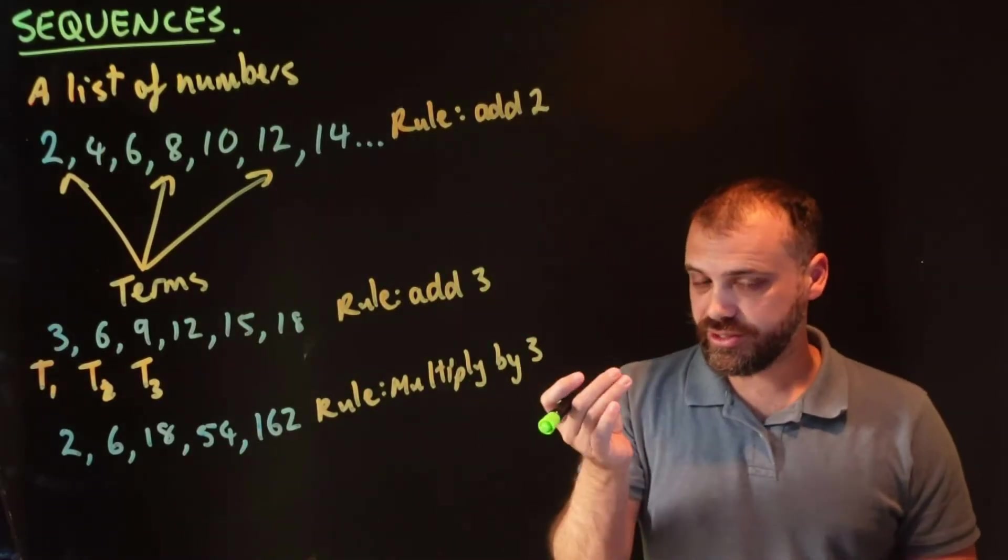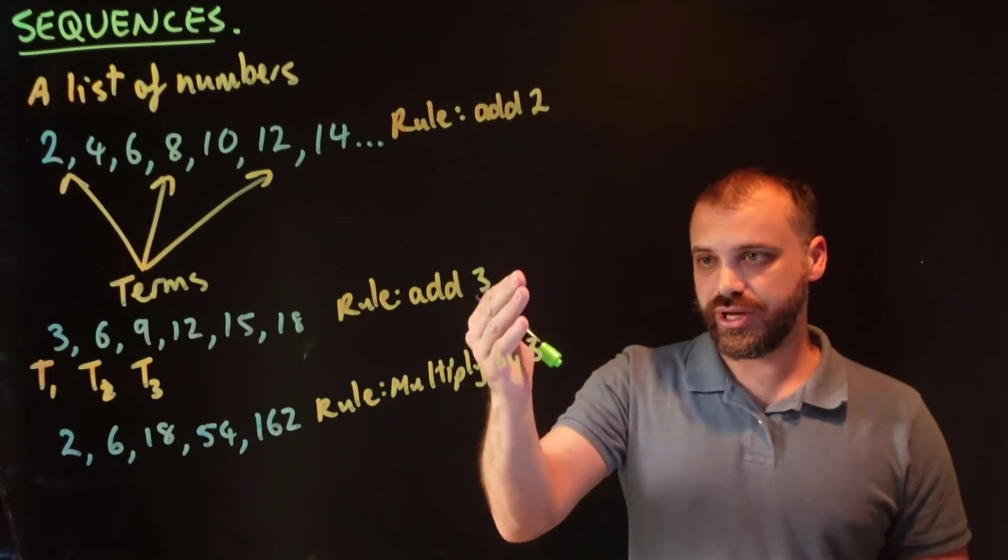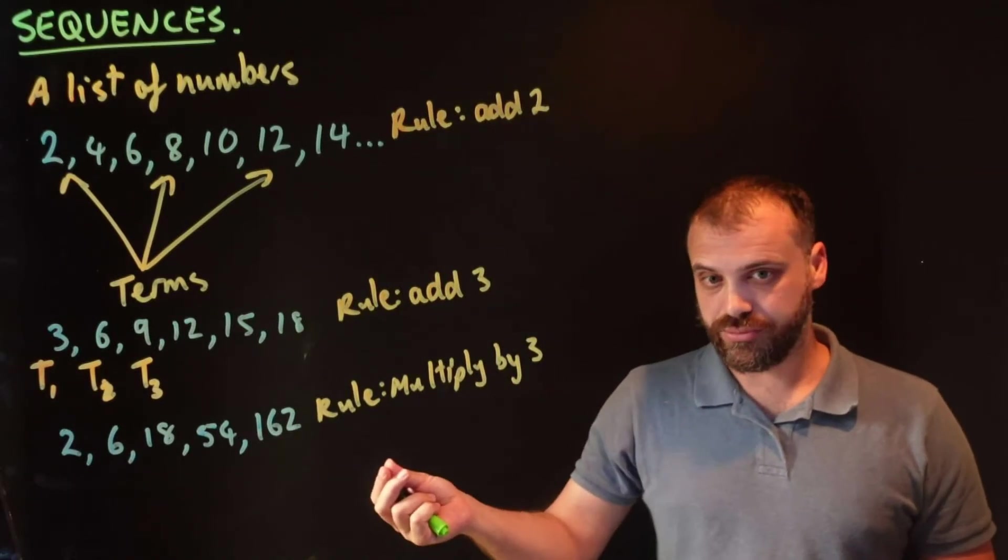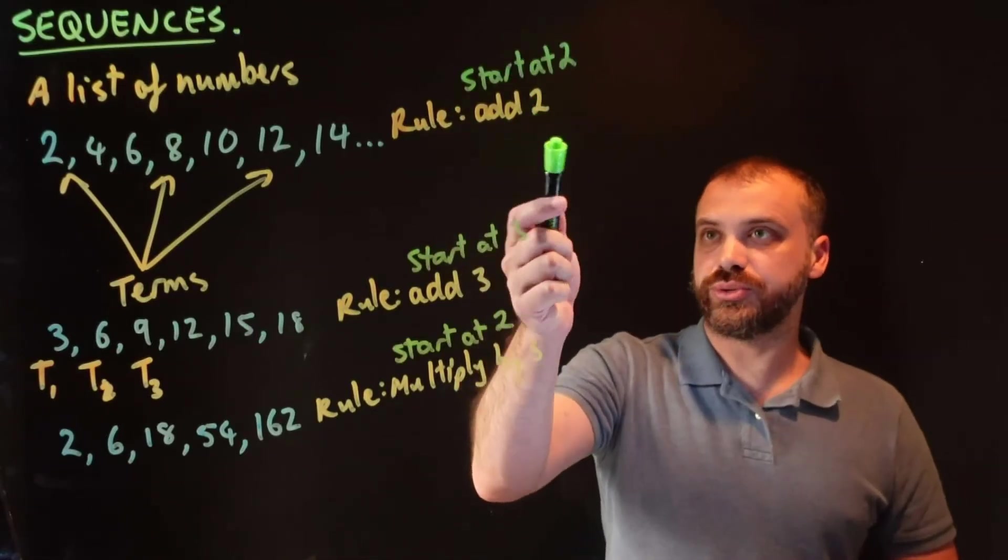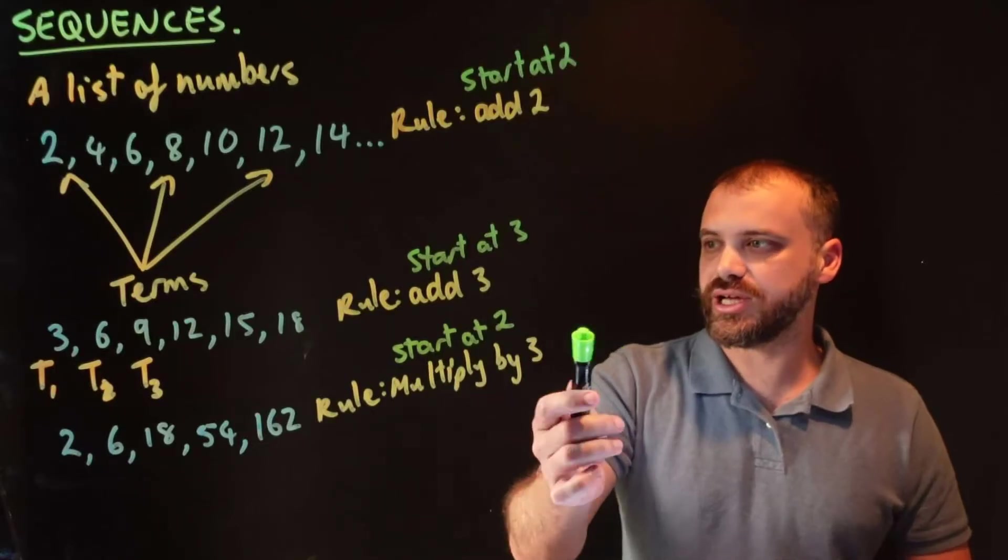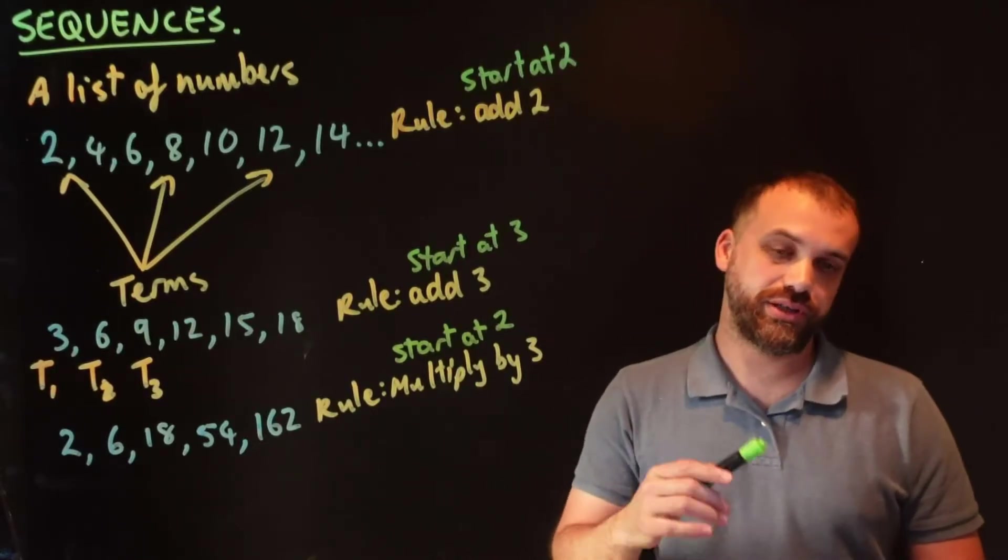To define a sequence like this, though, I can't just say add 2, add 3, multiply by 3. I've also got to tell you where to start from. So in this sequence, we started at 2 and added 2. In this sequence, we started at 3 and added 3. And at this sequence, we started at 2 and multiplied by 3.